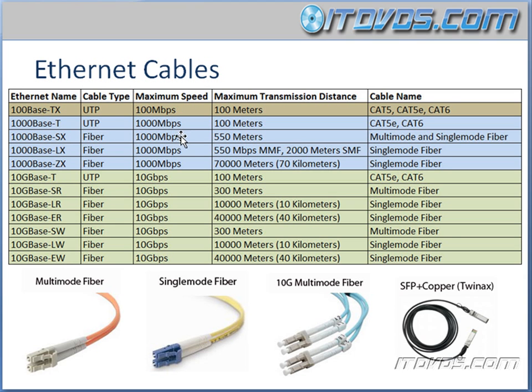1000BaseSX fiber can go 1000Mbps and it can go up to 550 meters. This can be multi-mode or single-mode fiber.